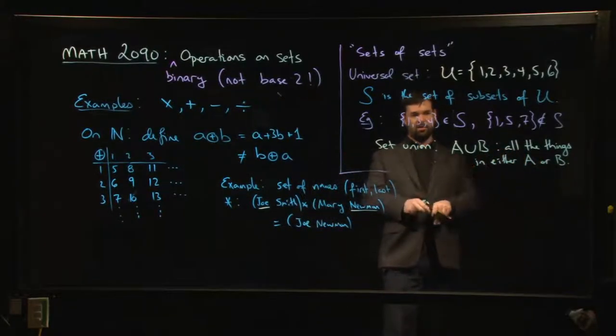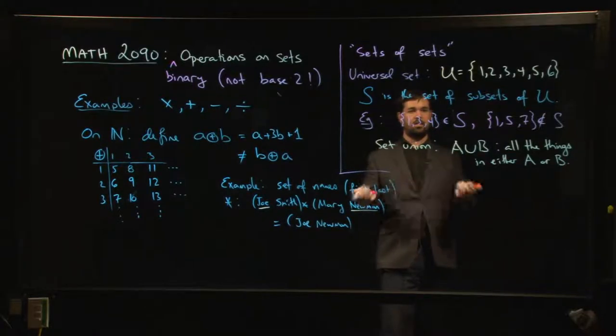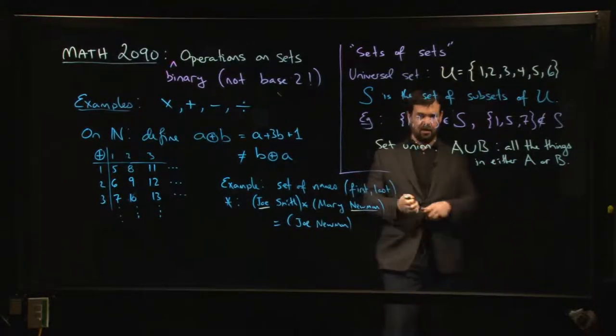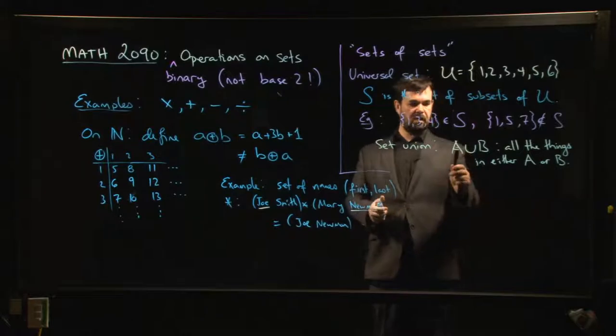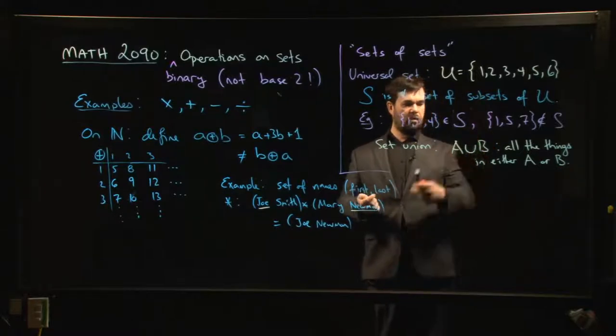So what the union does is you give it two sets and it collects up all the things that are in either one of the sets and puts them together into a new, bigger set.